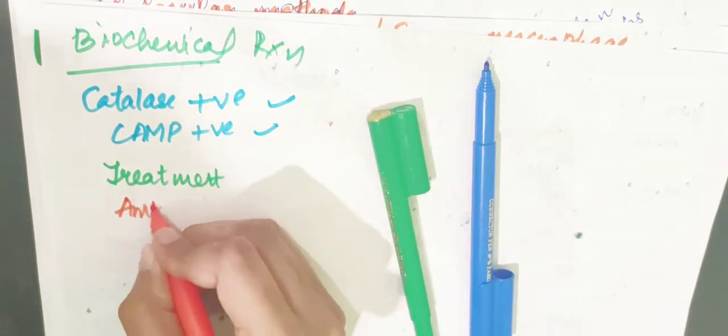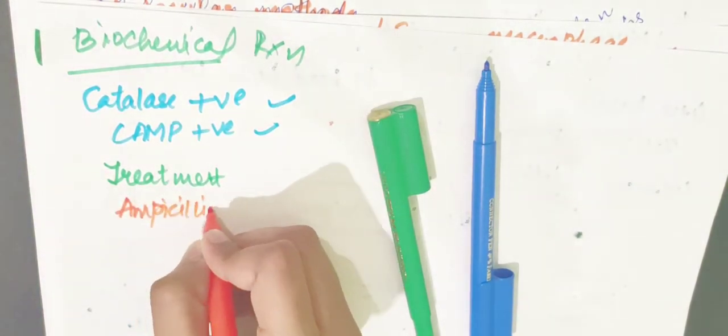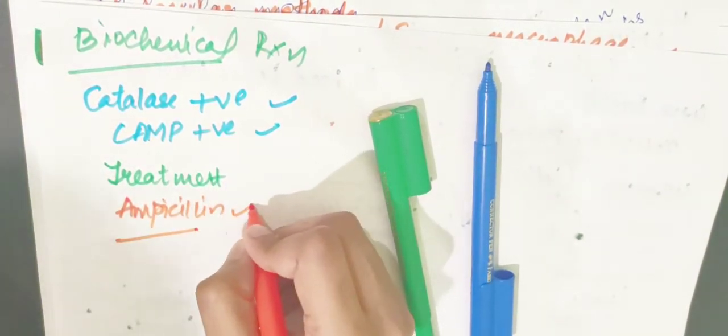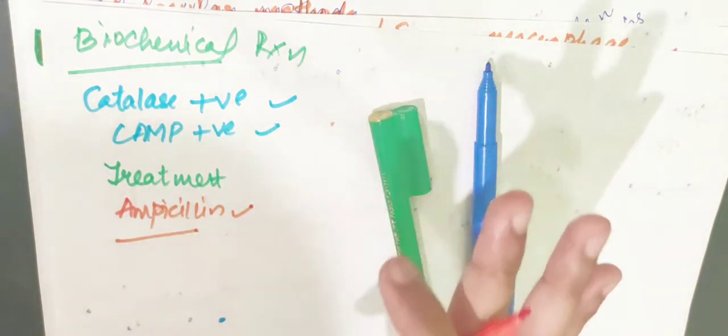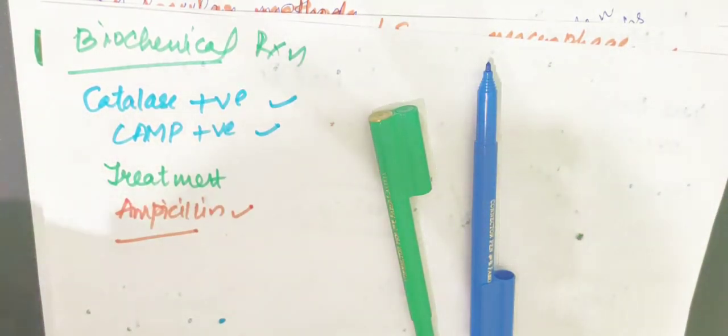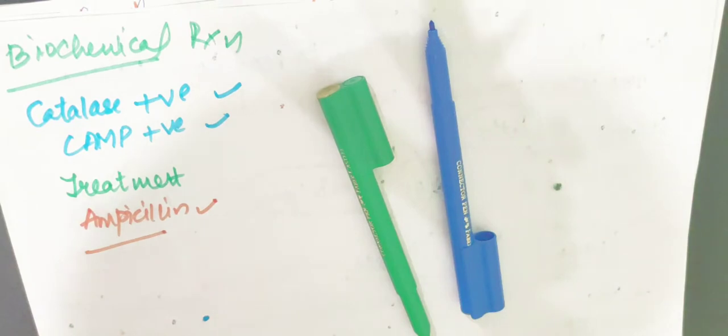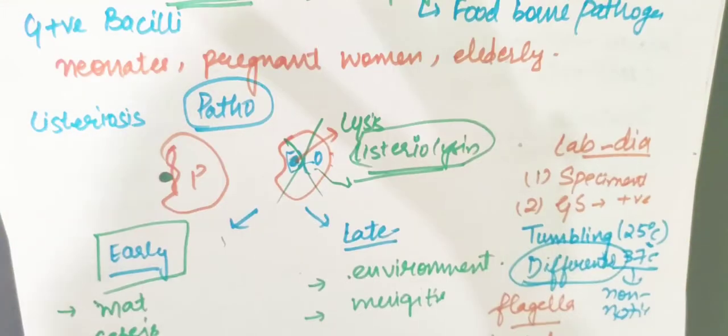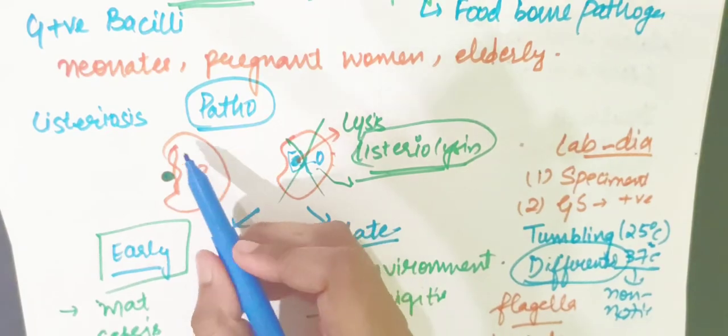For treatment, the drug of choice for Listeria monocytogenes is ampicillin. For prevention, cook food properly, wash fresh vegetables, keep utensils clean, and avoid unpasteurized dairy products.